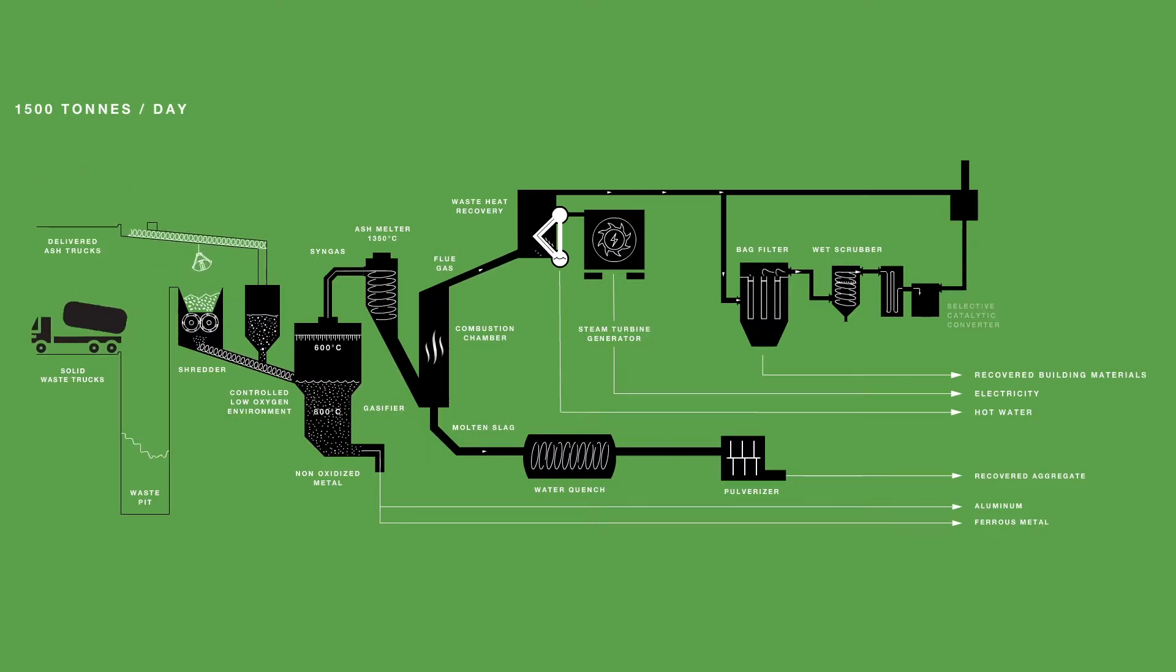After wet scrubbing, the gas enters the selective catalytic converter, removing nitrogen oxides. Before the treated flue gas is vented up the stack, it passes through a constantly monitored flue gas analyzer.